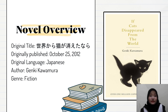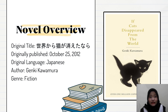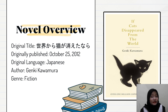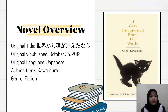First we're going to talk about the novel overview. This novel is originally a Japanese novel titled 'Sekai Kara Neko Ga Keitanara,' but the version I read is the English translation. It was originally published on October 25, 2012, in Japanese. The author is Genki Kawamura and the genre is fiction.